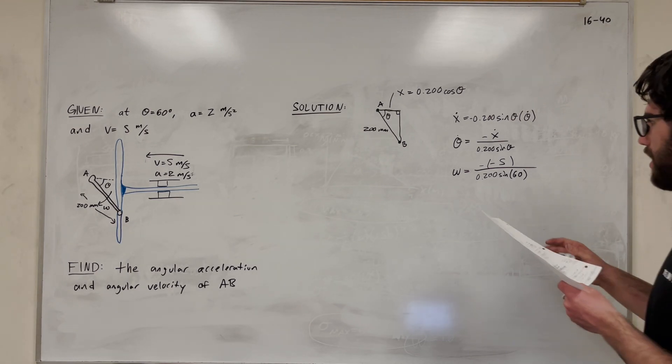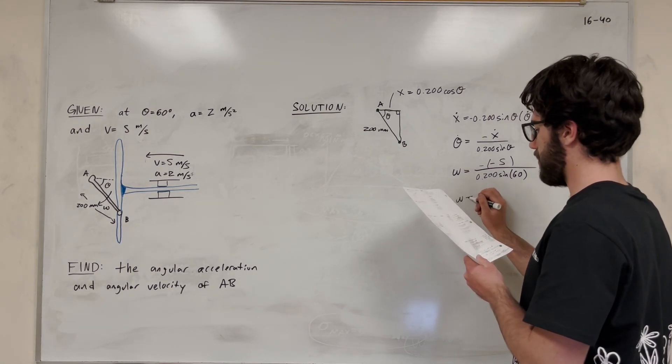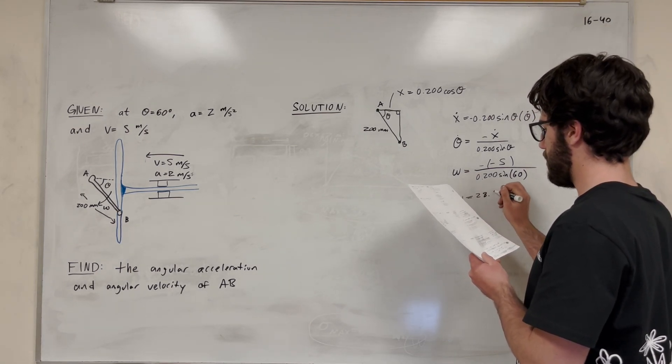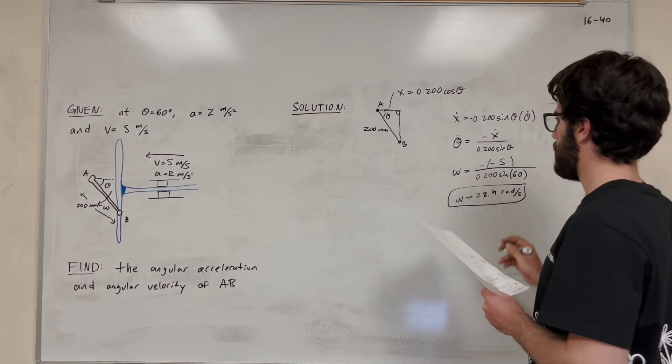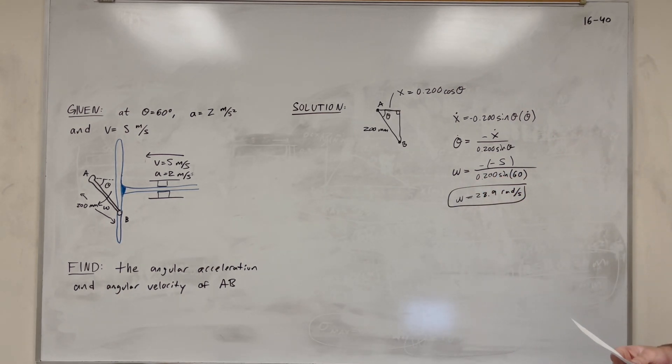Make sure I did that right. And then you're going to get that w, or angular velocity, is equal to 28.9 radians per second. All right, so we found the angular velocity. Now let's find the angular acceleration.